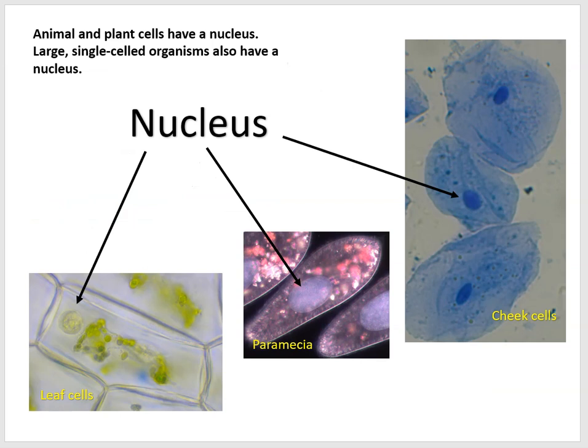Let's look at some other pictures of cells that have nuclei. Here we see animal cheek cells from a human with the stained nucleus. Here we have a paramecium, a large single-celled organism with a nucleus. And here is another leaf cell — something strange about this picture: the nucleus appears detached from the rest of the cellular material.